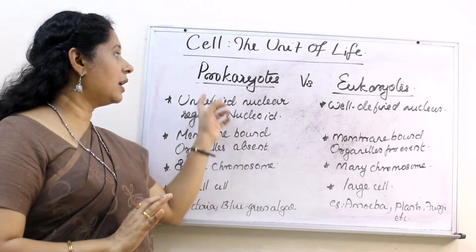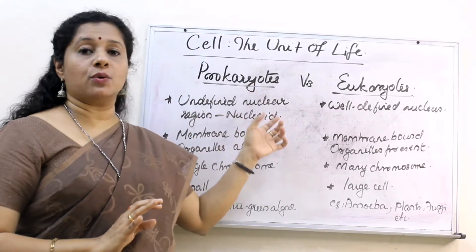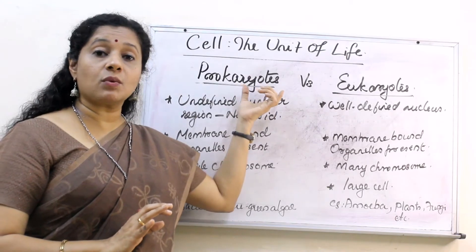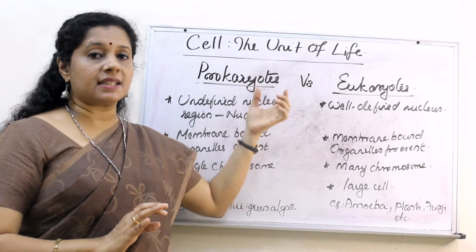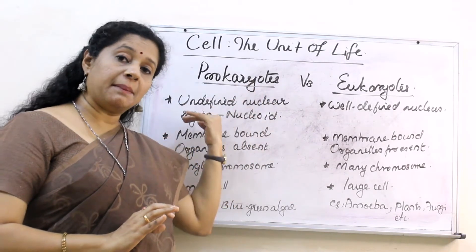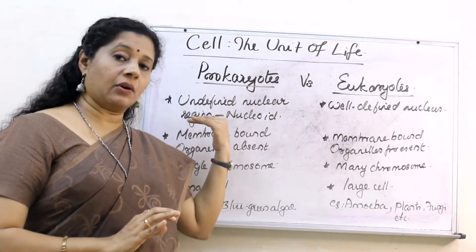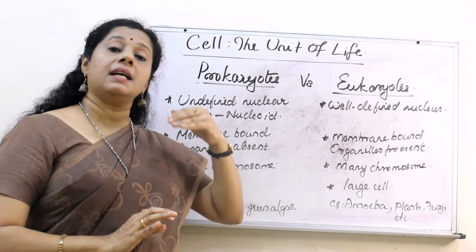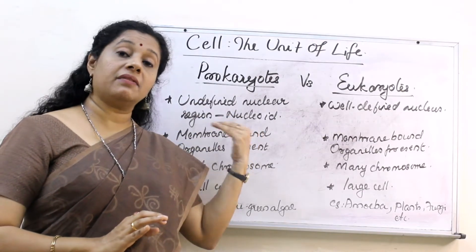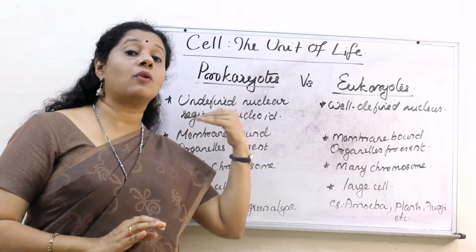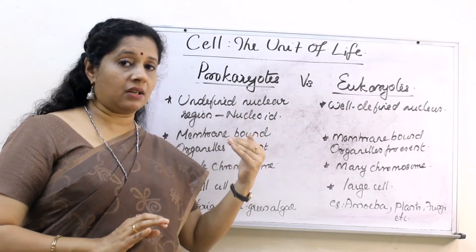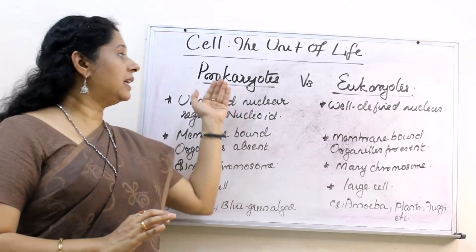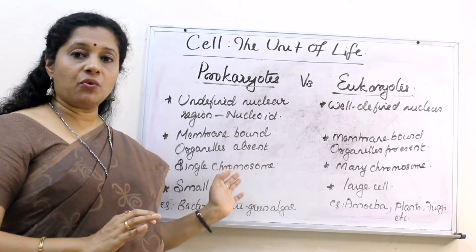Such organisms are called prokaryotes. 'Karyo' means nucleus and 'pro' means primitive. So they are the simplest forms and were the first life to originate. They did not have a proper nucleus.